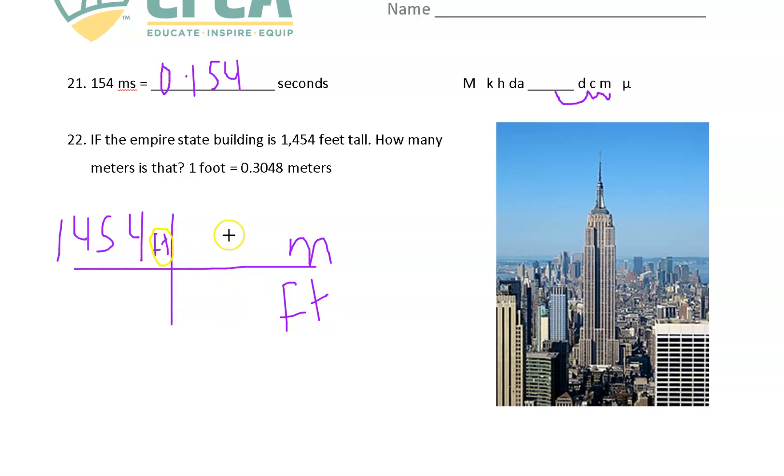How in the world do I know what numbers to put here? I know what numbers to put there because I have my conversion right there. One foot equals 0.3048 meters. So what I do with these two numbers, I multiply them and divide by the product of the bottom, which is just one. And so when you multiply 1454 by 0.3048, your answer, you should have received an answer, 400, 443.